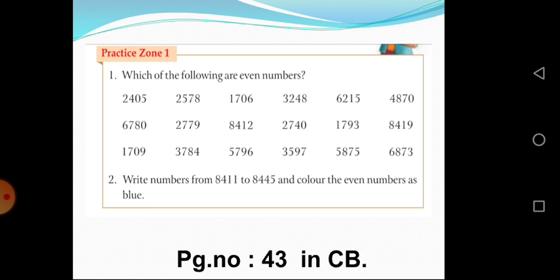Second one: Write numbers from 8411 to 8445 and color the Even Numbers blue. So, you have to write 8411 to 8445 and color the Even Numbers blue. Okay children.